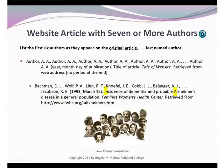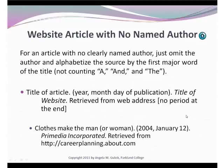If you have a website article with no named author at all, you just skip the author and you start with the title. So here we have the article, Clothes Make the Man or Woman. We put the date right behind the article — remember, normally we would put the date right after the author. We have the name of the website and the web address from which it was retrieved.